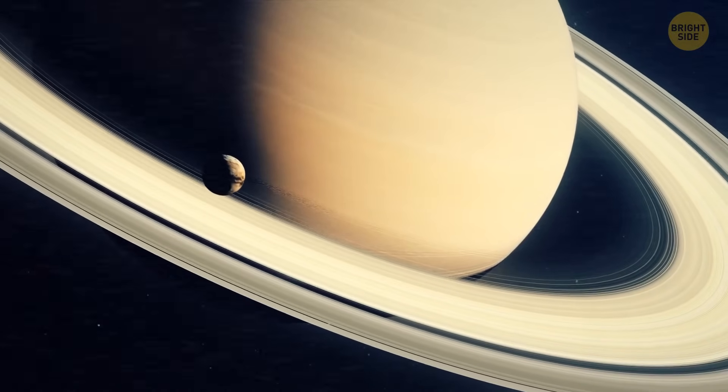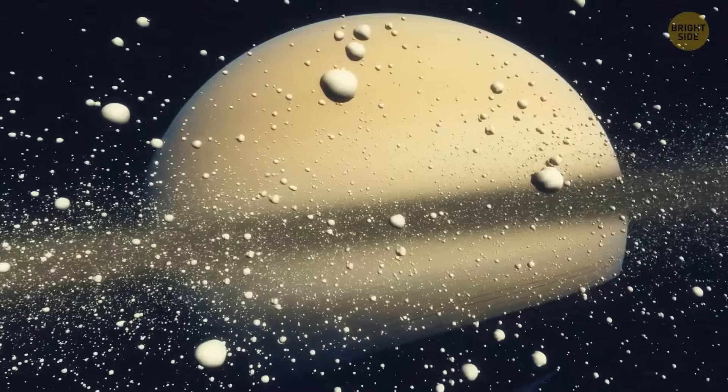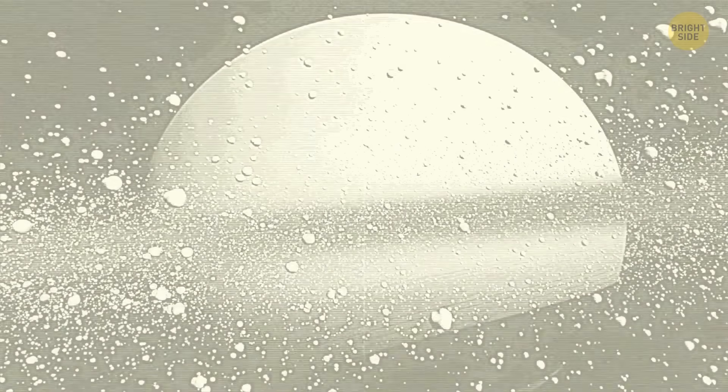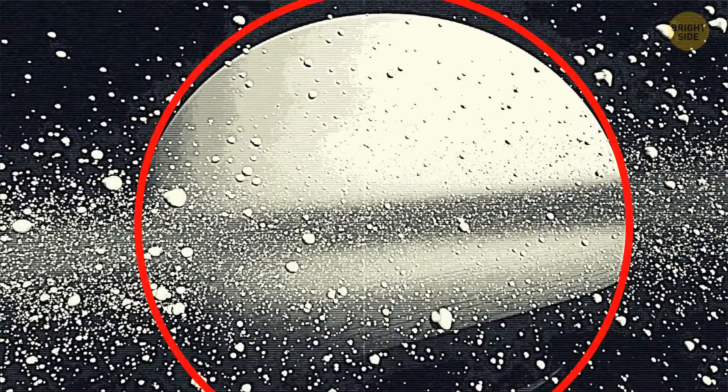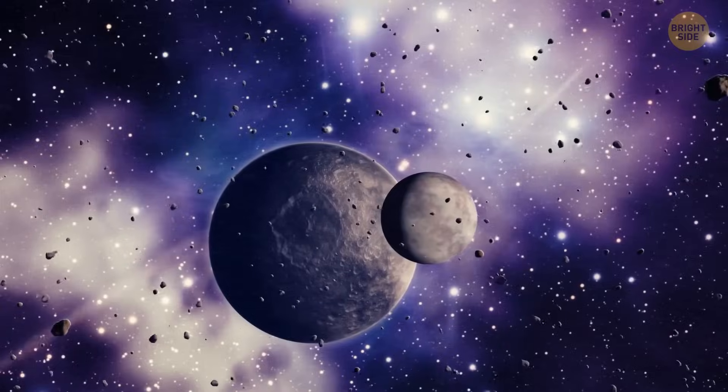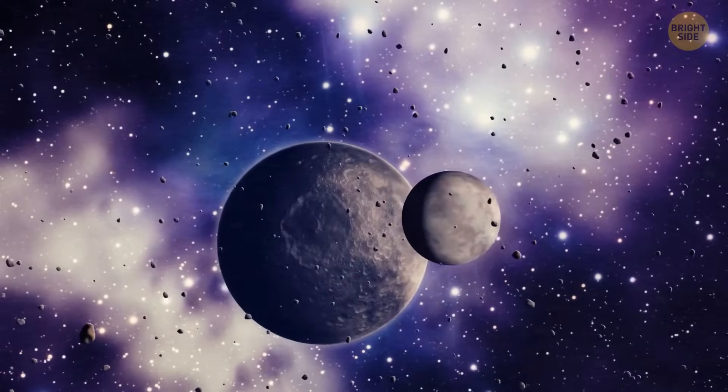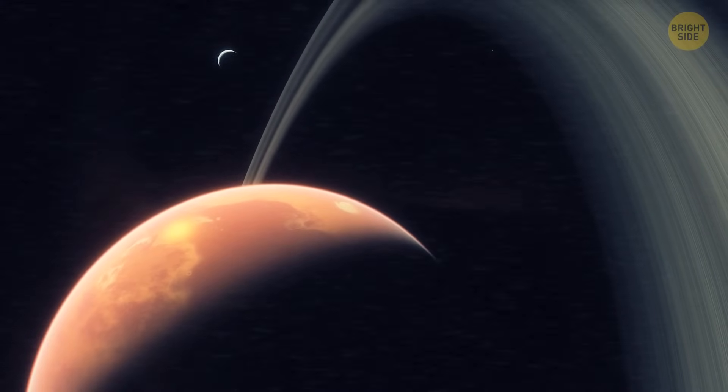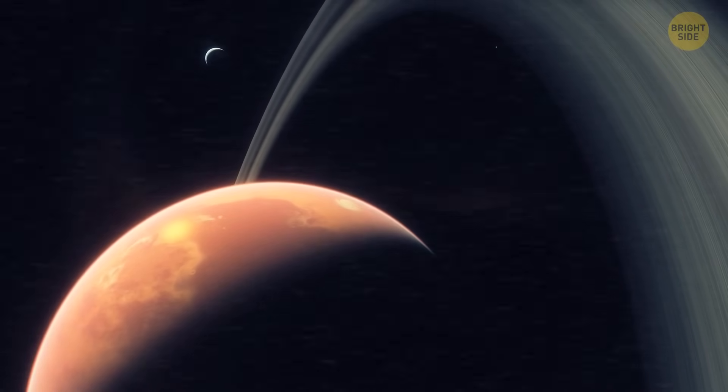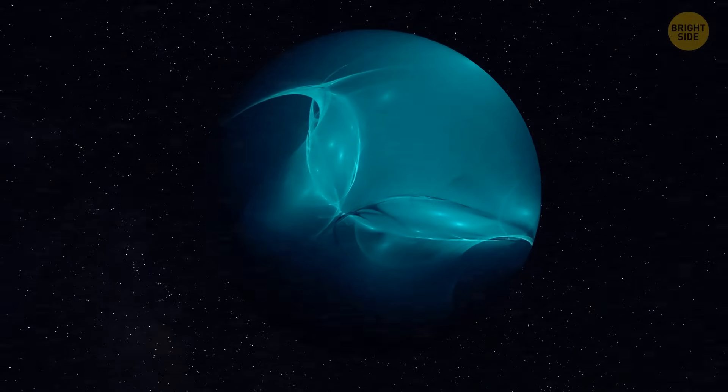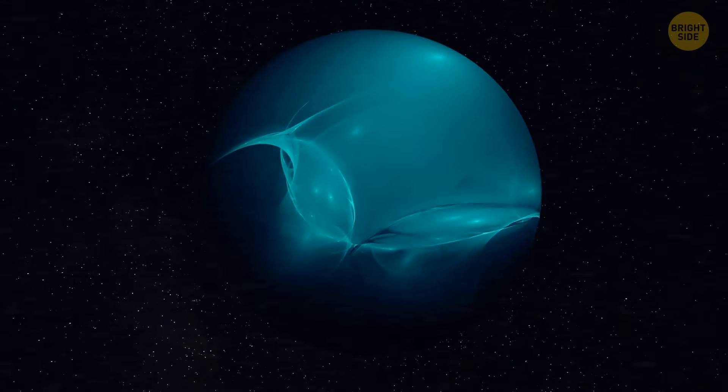Saturn, the ringed wonder, also joins the oblate party. It spins around with its beautiful rings, and its oblateness is even more pronounced than Jupiter's. These examples show how rotation can give planets a unique shape. They go from being perfectly round to having a delightful bulge around the middle. It's like cosmic pottery, where the spinning motion creates a playful and distinct shape.